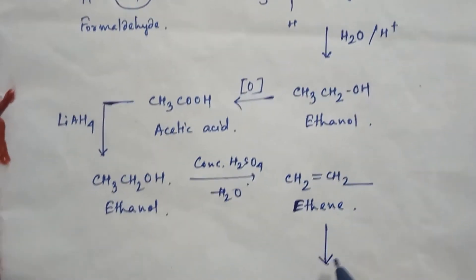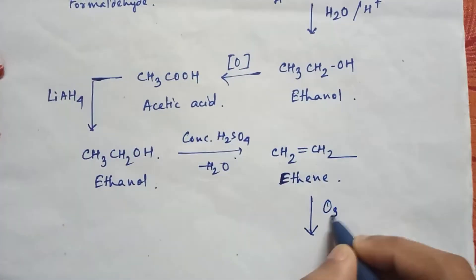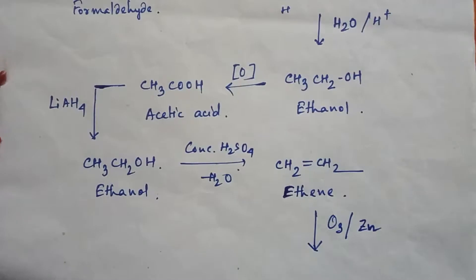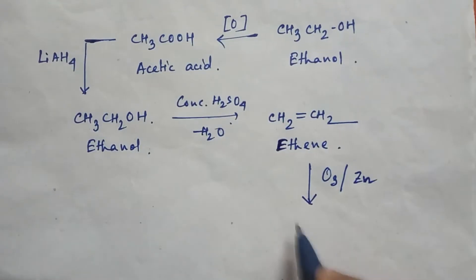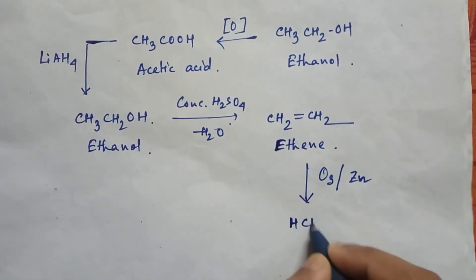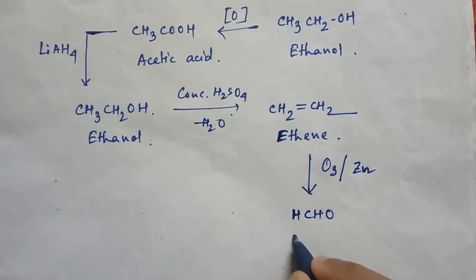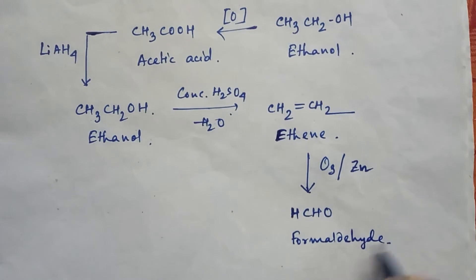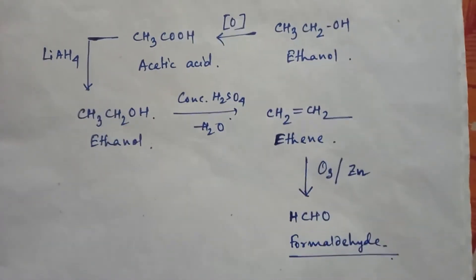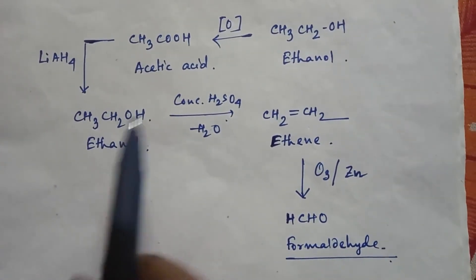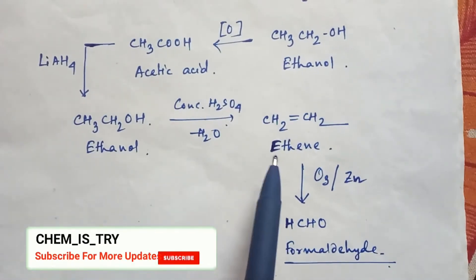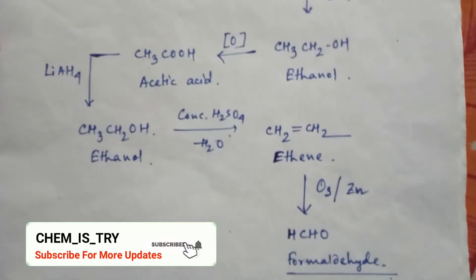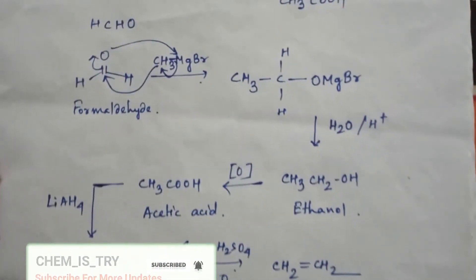Now in ethene if you add ozone, then you will get the product formaldehyde. So from acetic acid to formaldehyde, this is the process.